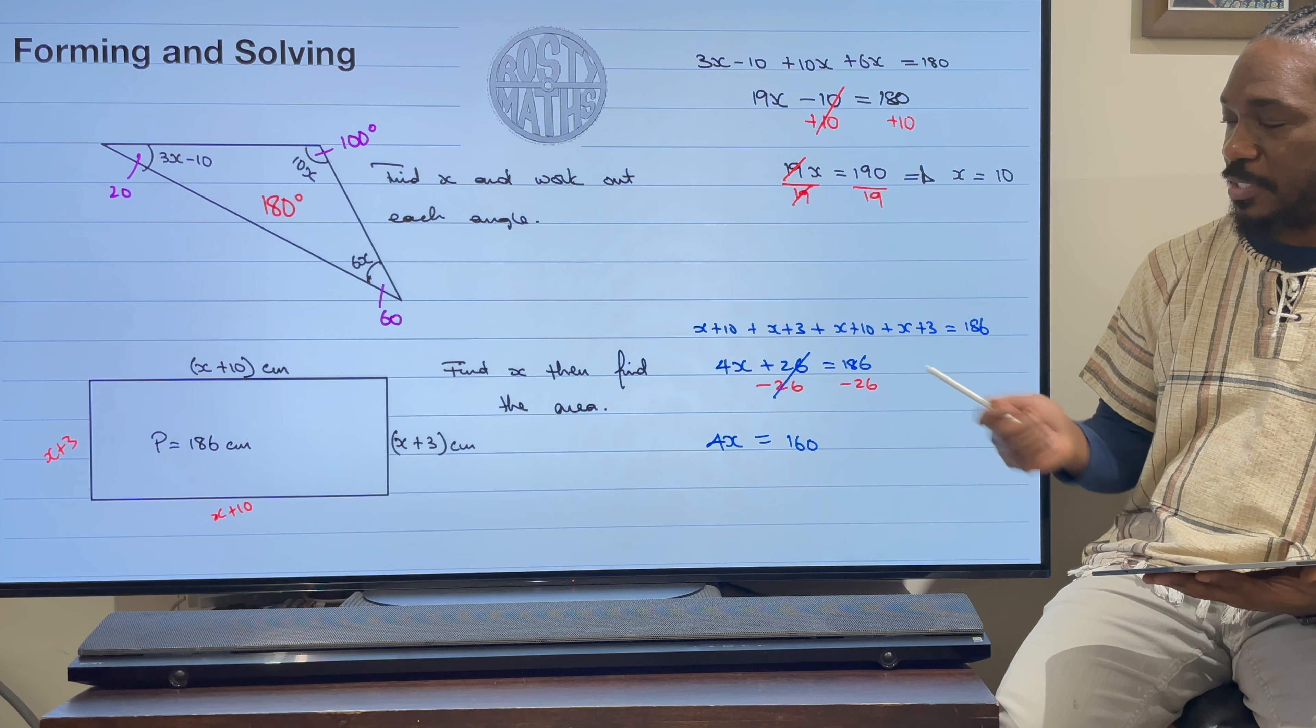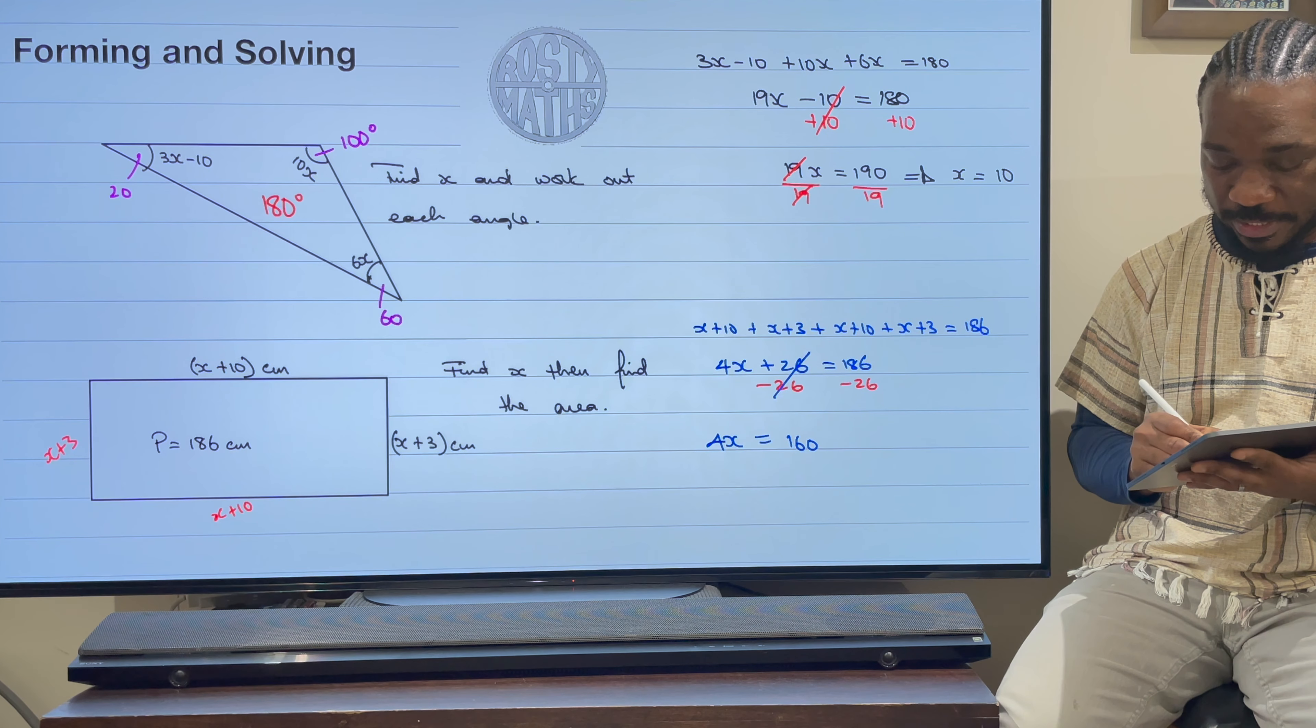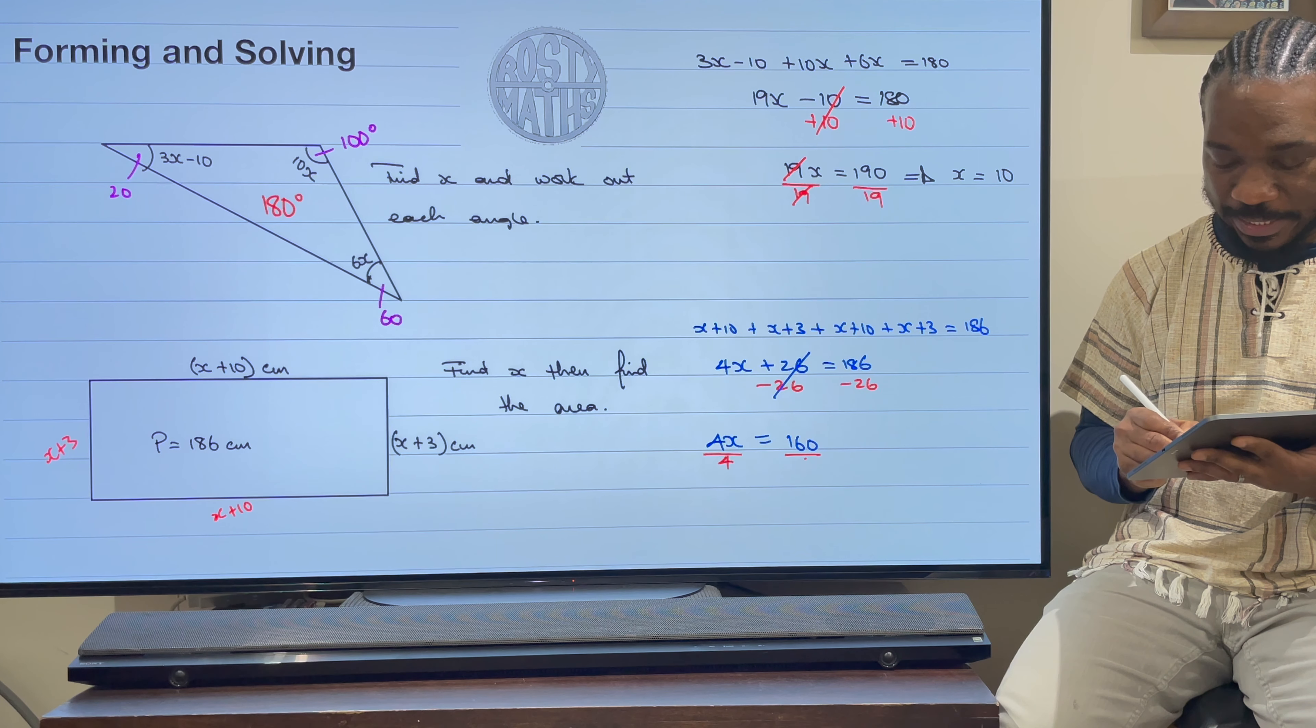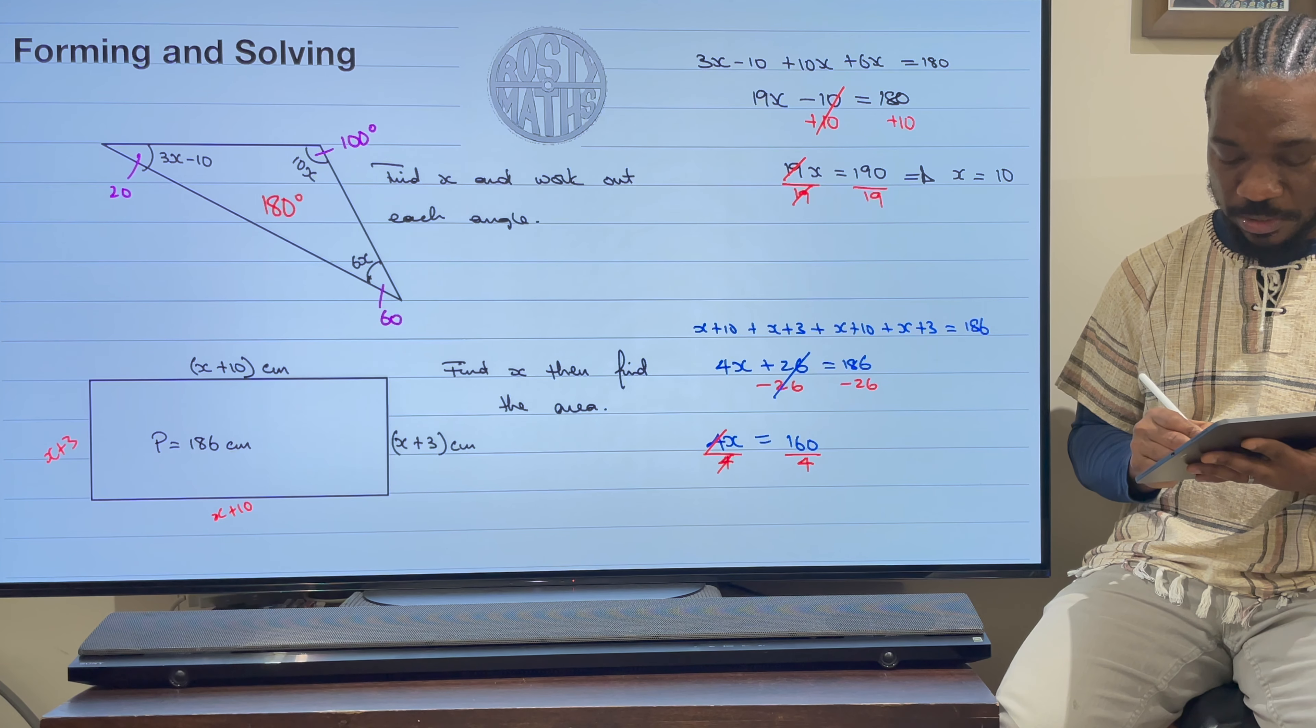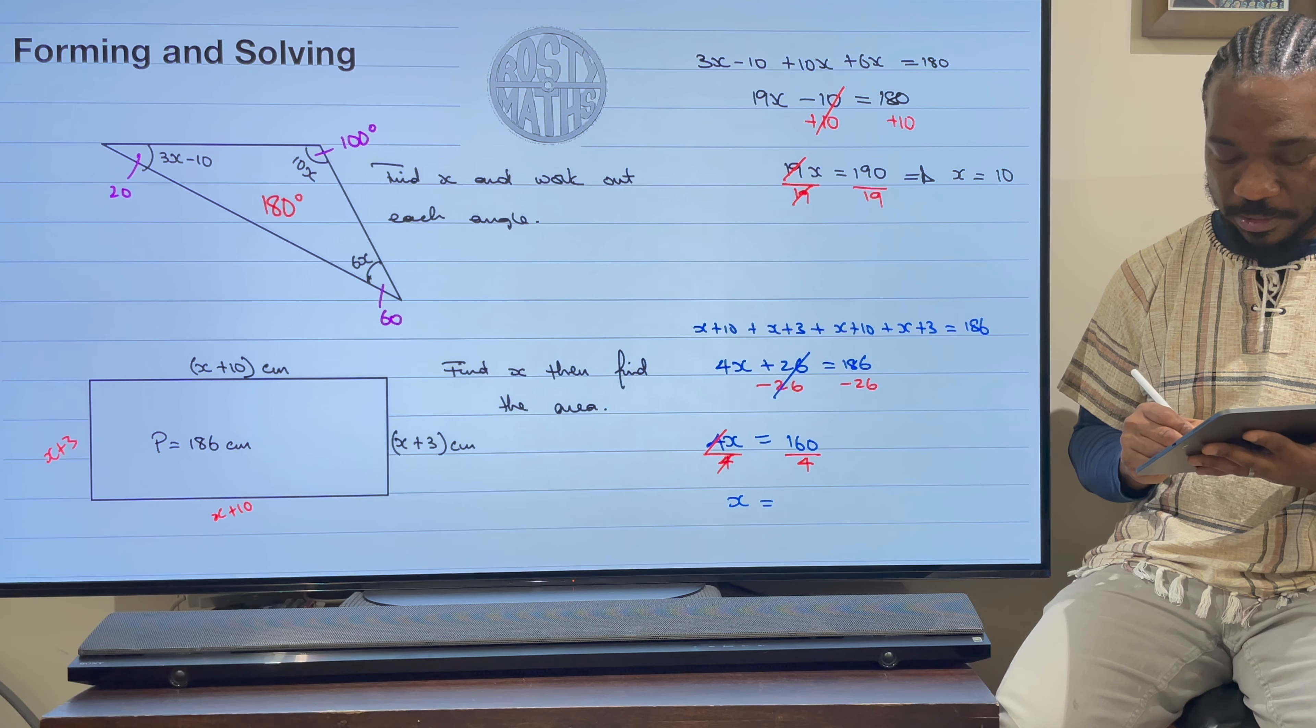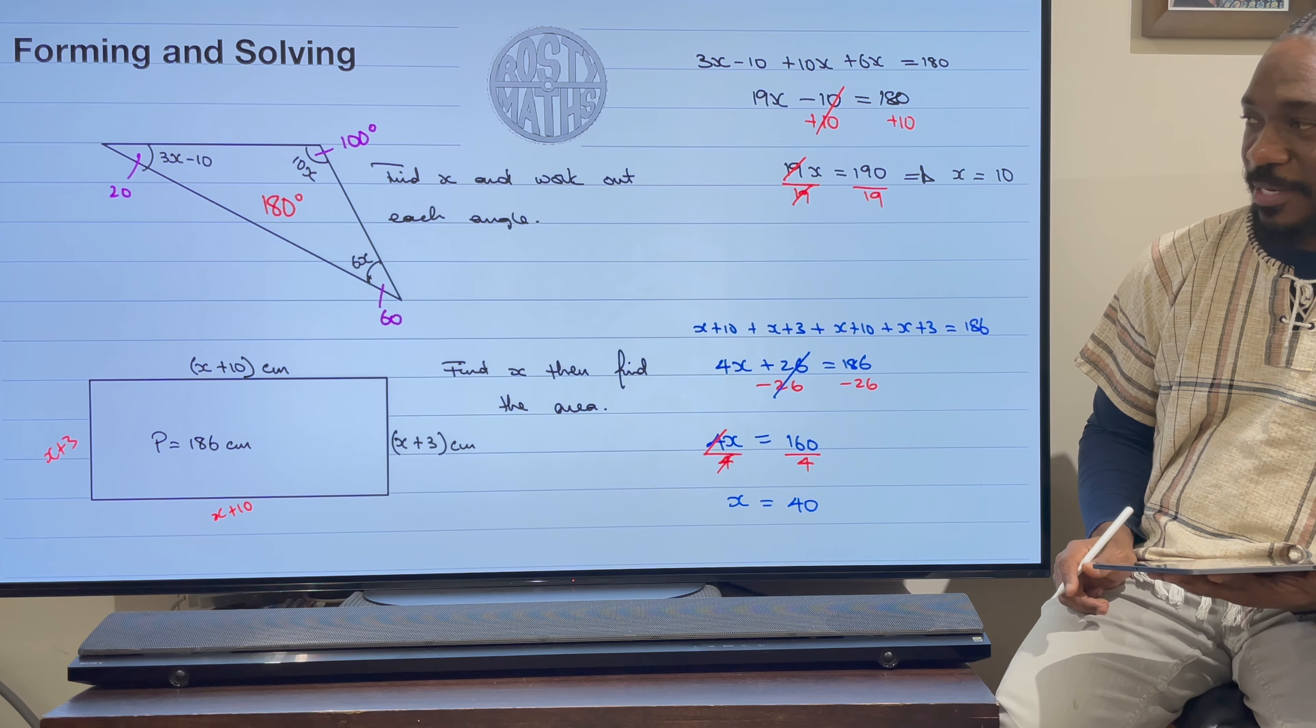And then now I'm going to finish this off by dividing by 4 to find x. These will cancel out here, and so x is going to be equal to 40.